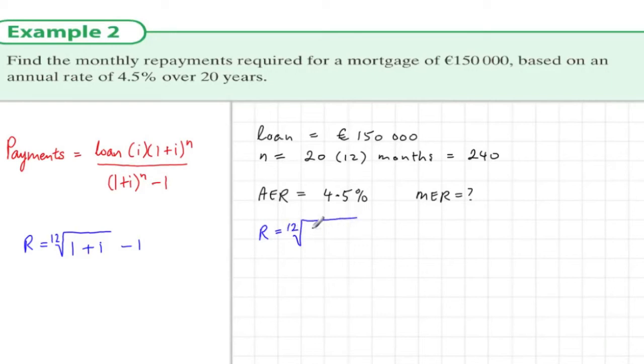Using this formula, we have 12th root of 1.045, because it's 4.5%, minus one. We sub this into the calculator and we get 0.0037, and remember it's four decimal places that we need of that monthly equivalent rate.